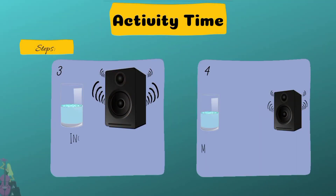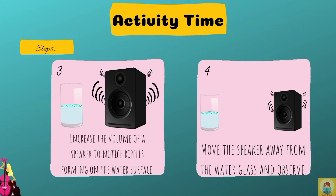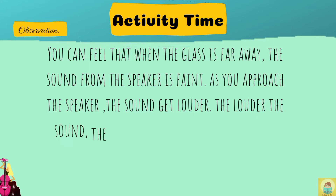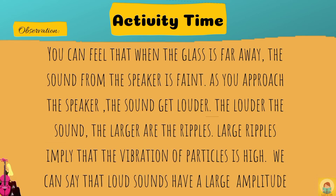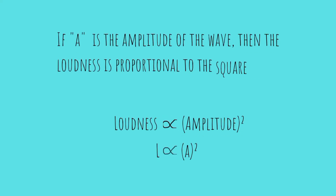Then increase the volume of the speaker to notice ripples forming on the water's surface. Later, move the speaker away from the water glass and observe. When the glass is far away, the sound from the speaker is faint. As you approach the speaker, the sound gets louder. The louder the sound, the larger are the ripples. Large ripples imply that the vibration of the particles is high, so loud sounds have a larger amplitude. If A is the amplitude of the wave, the loudness is proportional to the square of the amplitude.